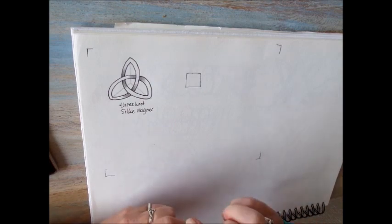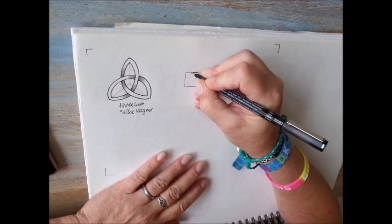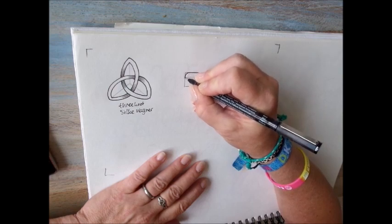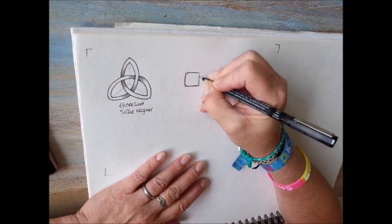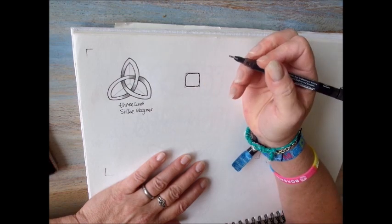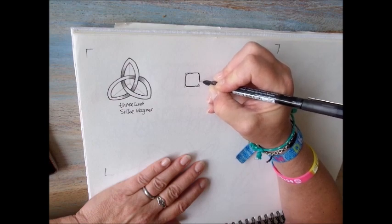Then pick up your pen and overdraw this line. Only the corners are round. Next step is to lengthen this line.